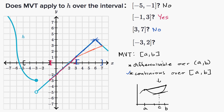What about from negative three to two? If we look at the open interval from negative three to two — not considering what happens at the endpoints — over the open interval it does look like we are both differentiable and continuous. So we're differentiable over the open interval. But clearly we're not continuous over the closed interval — at negative three, we are not continuous. Because of that, the mean value theorem does not apply.